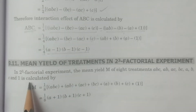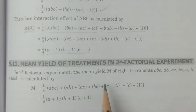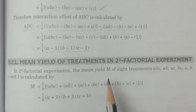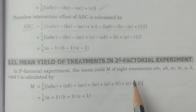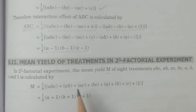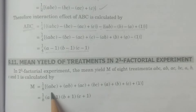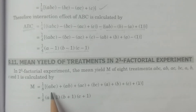First, in the 2³ factorial experiment, the mean yield M — this is called mean yield, capital M — of 8 treatments A, B, C, AB, AC, etc., is calculated by M = 1/8 × (ABC), which means it is the average yield obtained through the treatment ABC by applying treatment ABC.